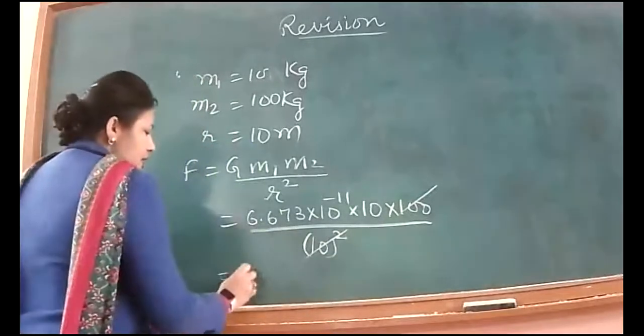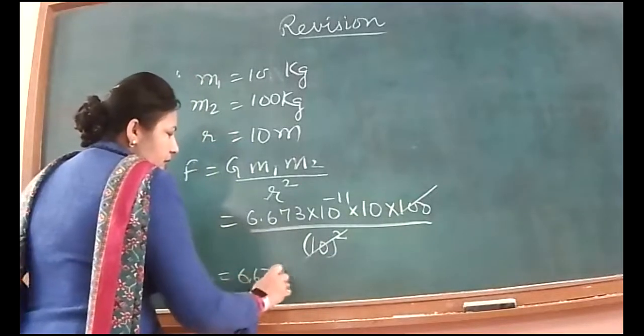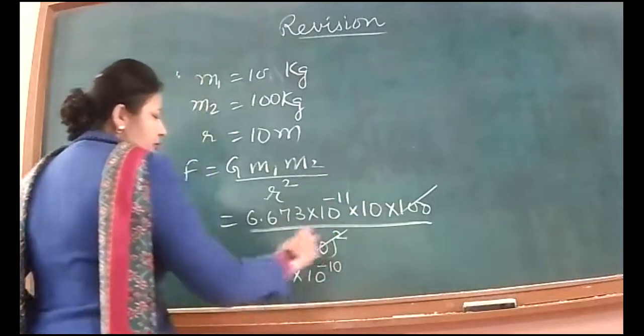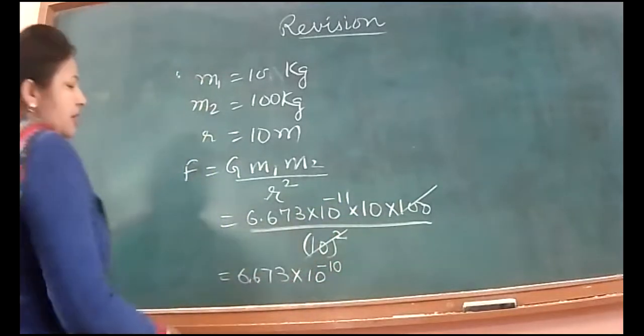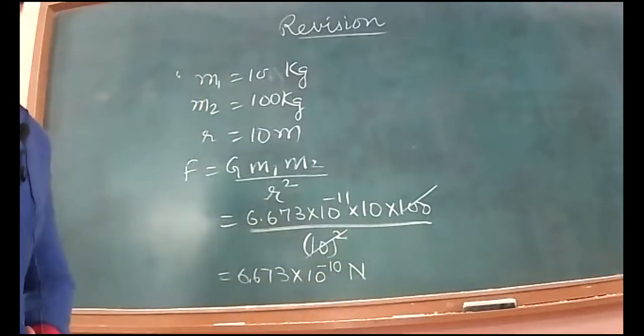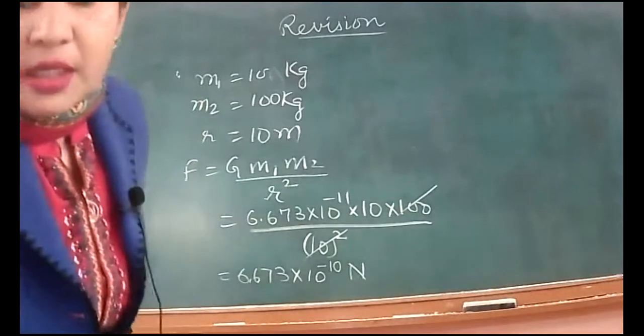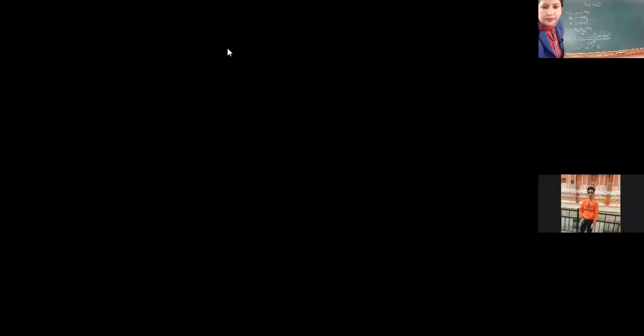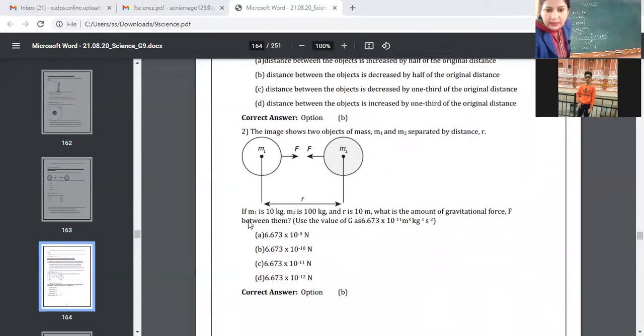So 100, 100 get canceled and how much do you get? 10 raised to power minus 11 into 10 raised to power 1, so that is 10 raised to power minus 10. This is going to be our answer. Let's check which option is this. This is second option, so B part is correct. Any doubt to any student? Yes, answer is B here.